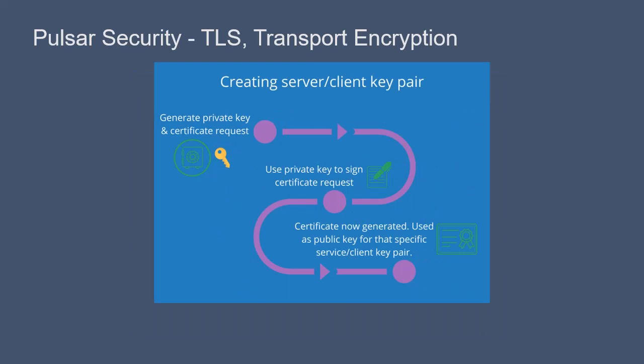Here is the flow of this process for creating the server-client key pair. First, the administrator generates a private key and a certificate request. Then, the administrator uses the certificate authority private key to sign the certificate request. Once signed, the certificate is generated. This certificate is then the public key for that specific server-client key pair.